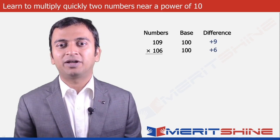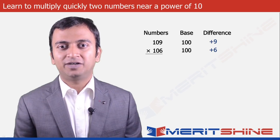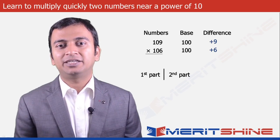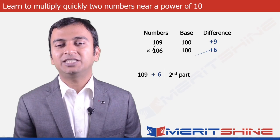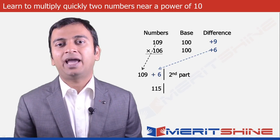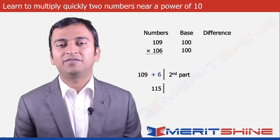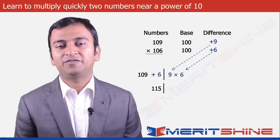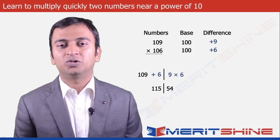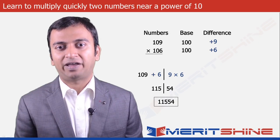We can now proceed to write down our answer which would again be in two parts. The first part would be 109 added to the difference from the second, which is plus 6, giving us 115. The second part would be the product of the differences, which is plus 9 into plus 6, which is 54. So clubbing these two we get our final answer as 11554.